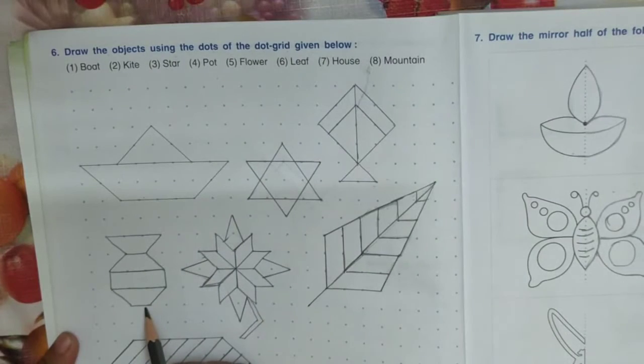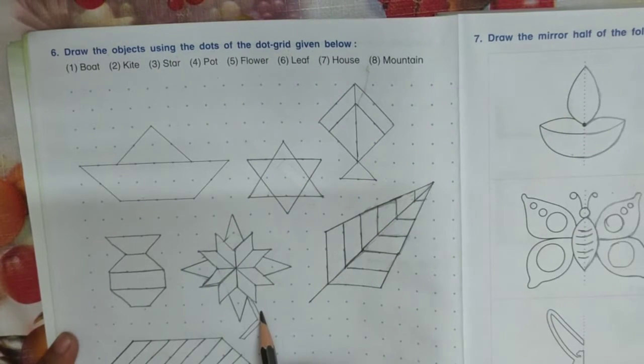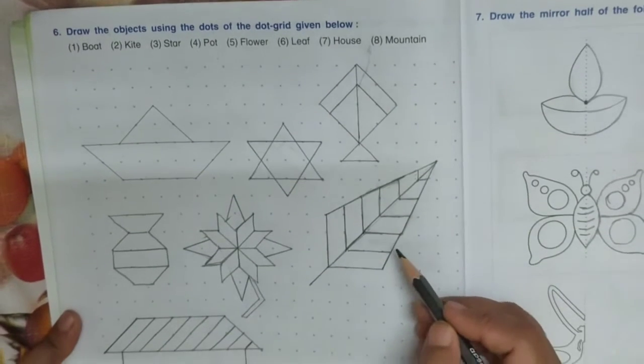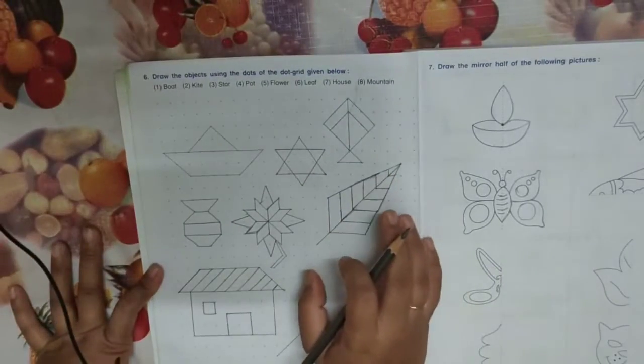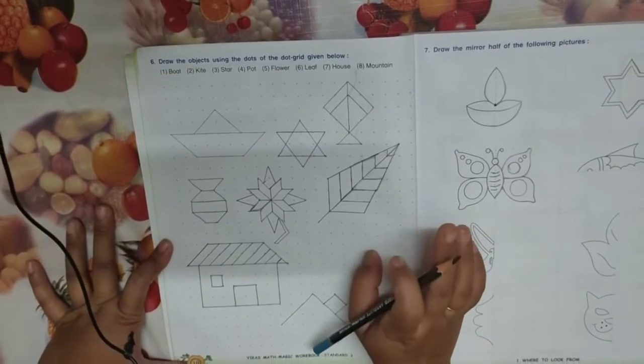Now pot. This one is the pot. Flower, I have also made the drawing of flower. Leaf is drawn by joining the dots. All the pictures, all the objects I have made by joining the dots.